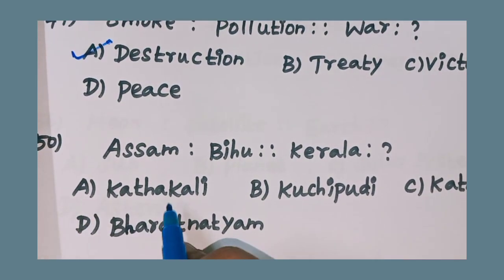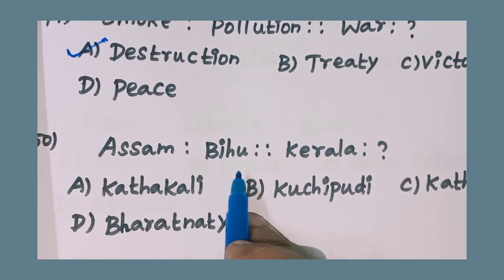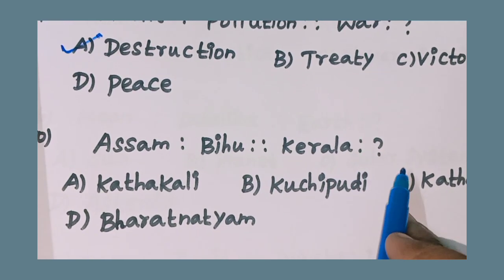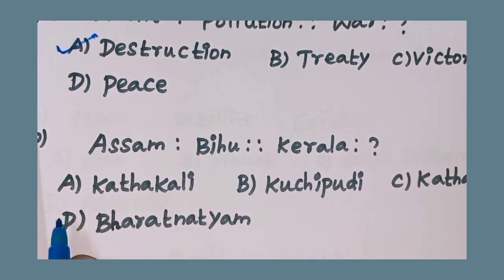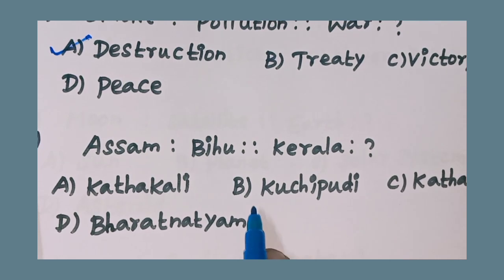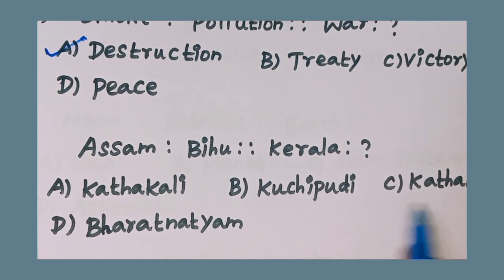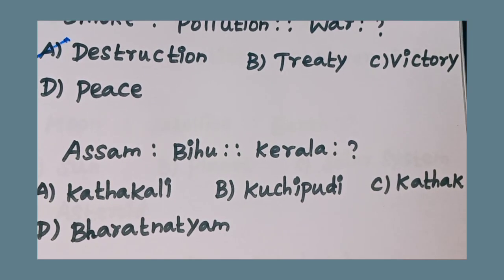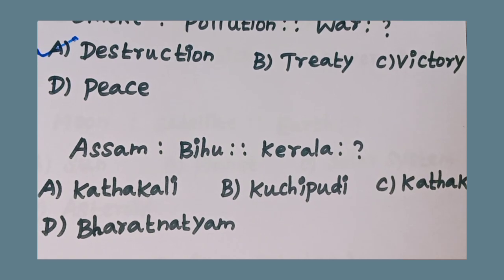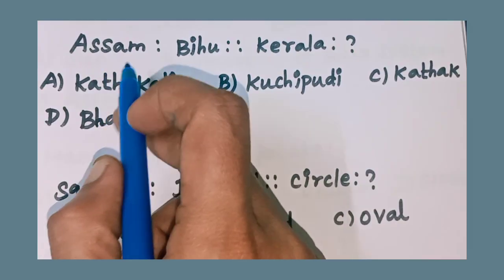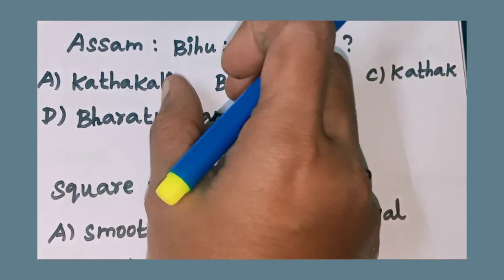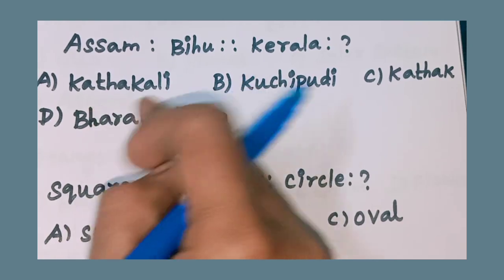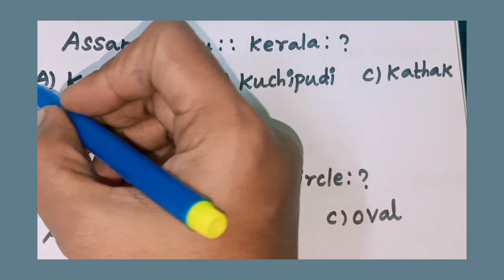50th question: Garba is to Gujarat as Kerala is to question mark. Option A: Kathakali, Option B: Kuchipudi, Option C: Kathak, Option D: Bharatanatyam. Garba is the national dance of Gujarat; Kerala's national dance is Kathakali — Option A: Kathakali.